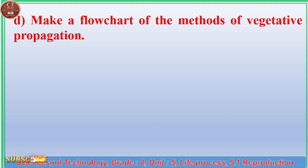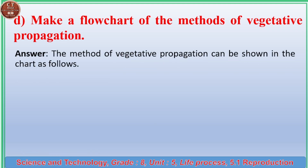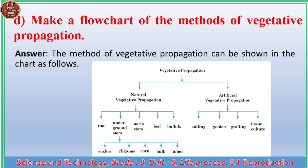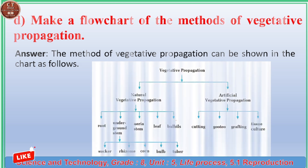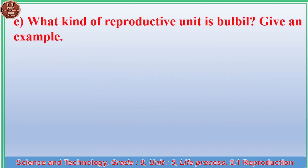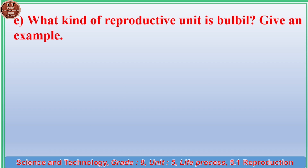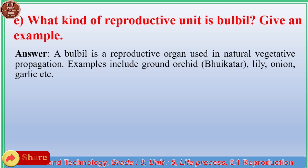(d) Make a flow chart of the methods of vegetative propagation. Answer: The method of vegetative propagation is shown in the chart. (e) What kind of reproductive unit is a bulbil? Give an example. Answer: A bulbil is a reproductive organ used in natural vegetative propagation. Examples include ground orchid, buakitar, lily, onion, and garlic.